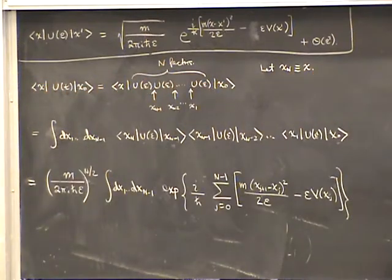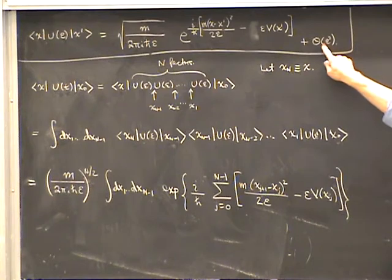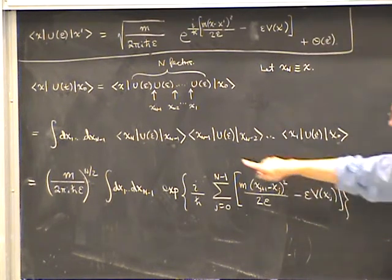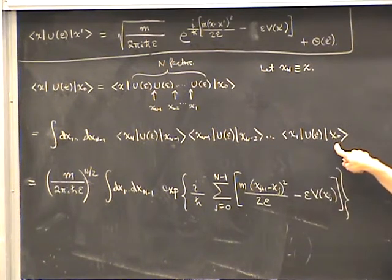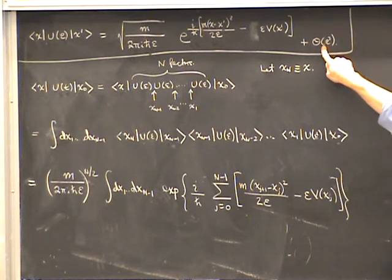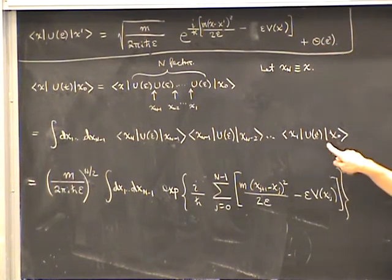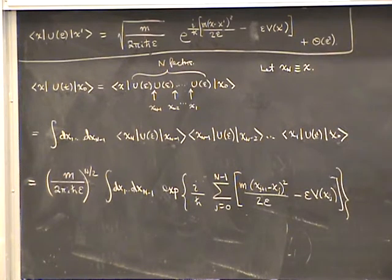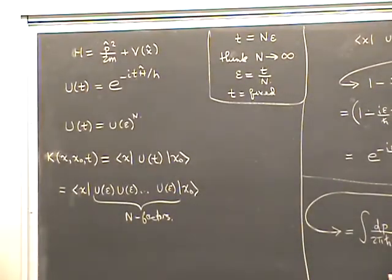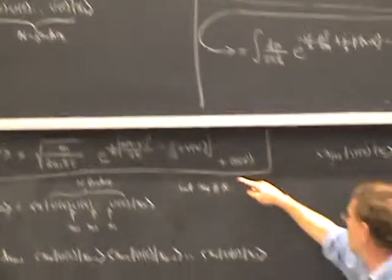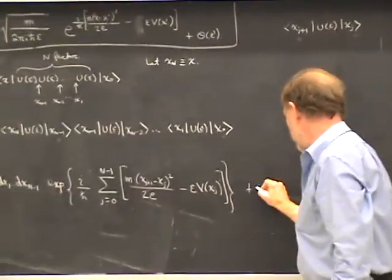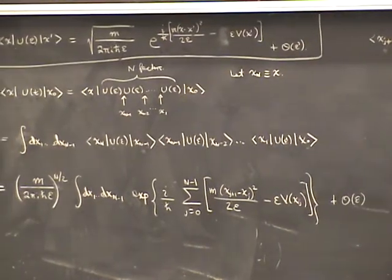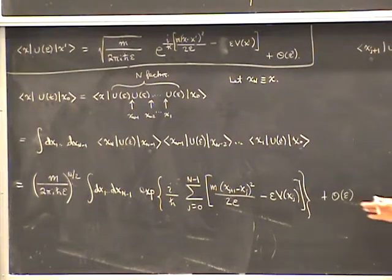There's one issue: I still have to account for the order epsilon squared error — this is only an approximation, and I'm putting this approximation into each of N factors. Each term has an error of order epsilon squared, and there are N of them, so the total error is of order N times epsilon squared. But since epsilon equals T over N and T is fixed, N times epsilon squared equals order epsilon. So although the error gets bigger with N, it's still only order epsilon for any finite subdivision.